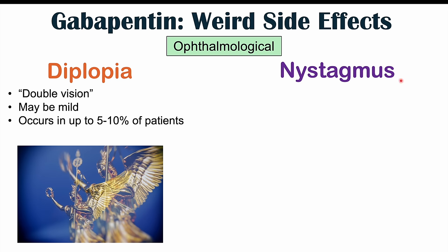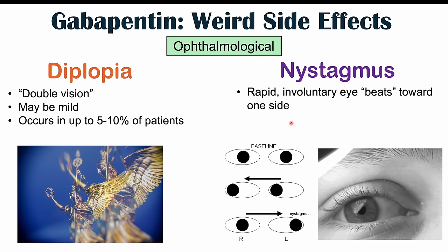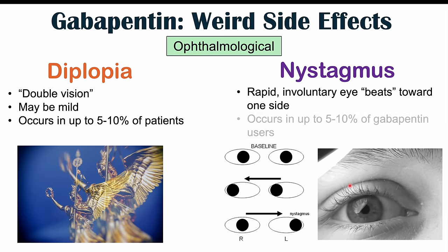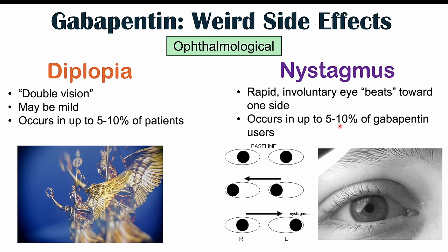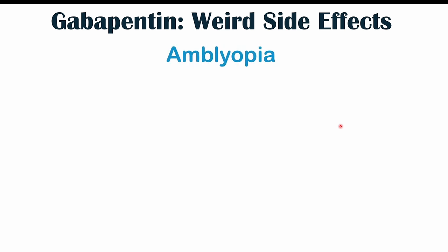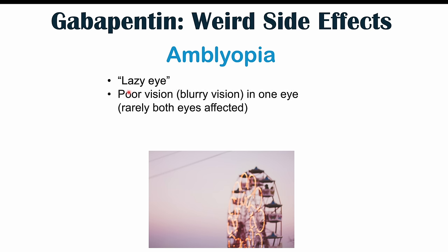We can also see nystagmus, which is rapid involuntary eye beats toward one side. If you look toward one side and then the other, you may notice this beating of the eyes back toward the previous side. It can occur in up to 5% to 10% of patients as well. Another potential ophthalmological side effect is amblyopia — a lazy eye or poor or blurry vision, especially in one eye, rarely in both. This occurs in 1% to 5% of patients.